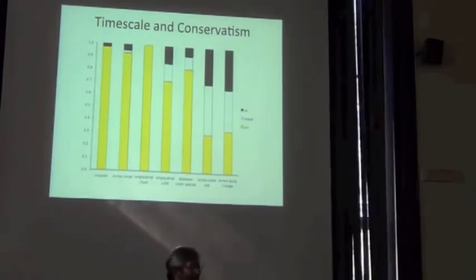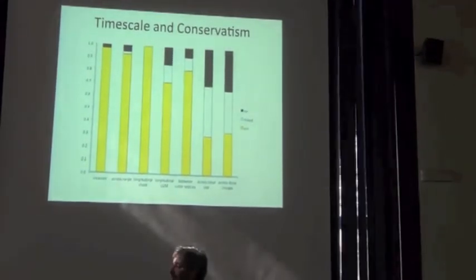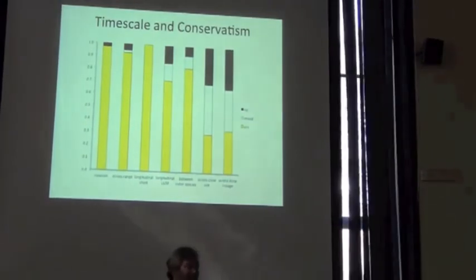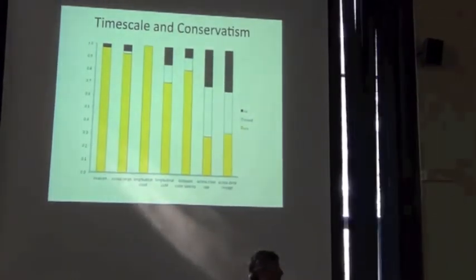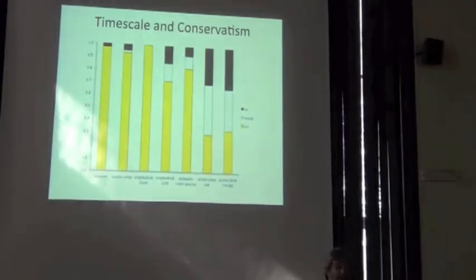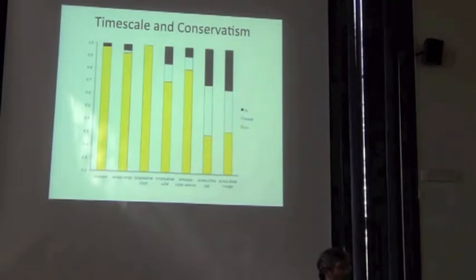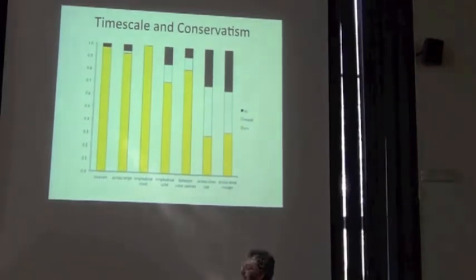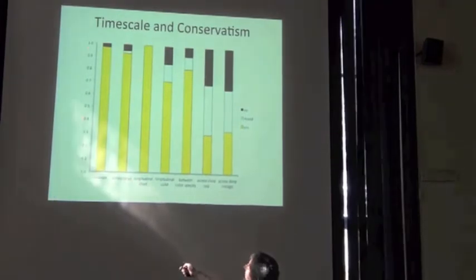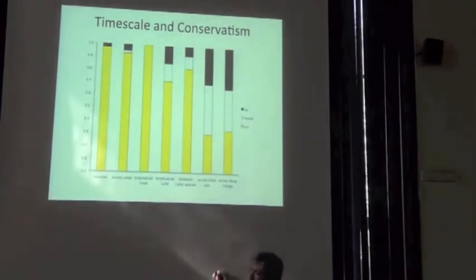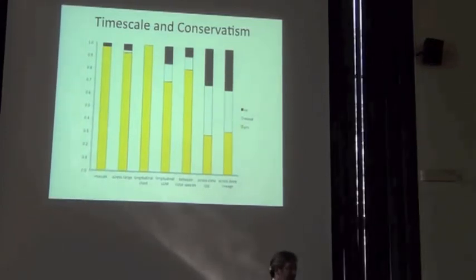So this result is perfectly, satisfyingly obvious. It's exactly what we expect. But in many ways, it cleans up this discussion a bit of are niches conserved or not. It's not a question that's reasonable. The question is, are niches conserved over time scales like this, or time scales like this, or deeper?